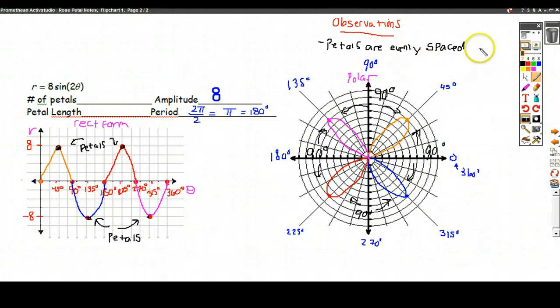And so they're evenly spaced 90 degrees, which we know we can represent as 360 degrees divided by 4, where that 4 is the number of petals.